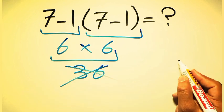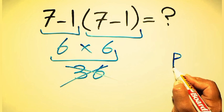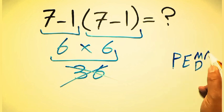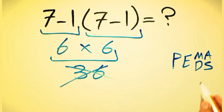because according to the order of operations, first we have to do parentheses, then exponents, then multiplication or division, and finally addition or subtraction. Remember that multiplication and division have equal priority, and we have to work from left to right. The same applies to addition and subtraction.